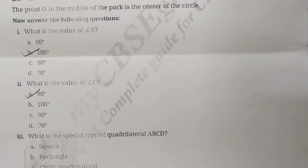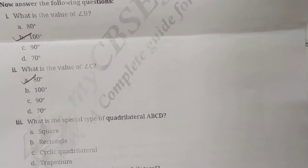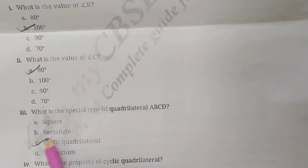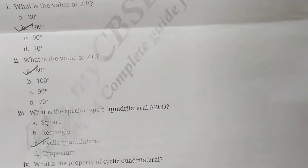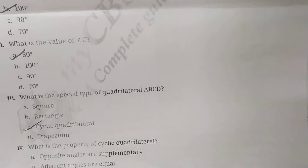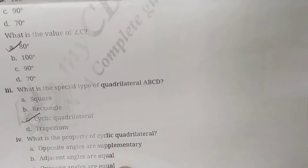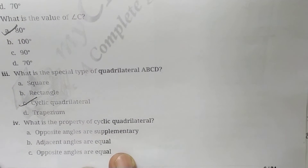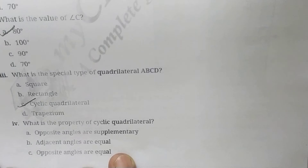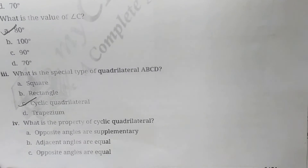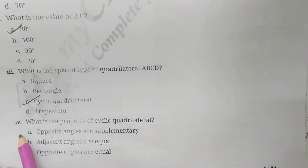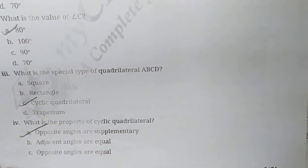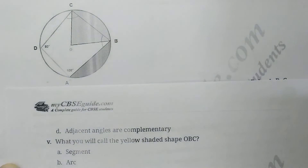Third question: what is the special type of quadrilateral ABCD? It is a cyclic quadrilateral because all its vertices lie on a circle. Fourth question: what is the property of a cyclic quadrilateral? The opposite angles sum to 180 degrees — that is, they are supplementary.